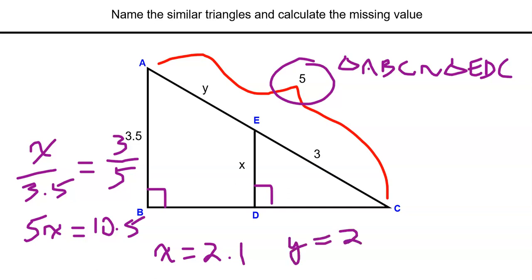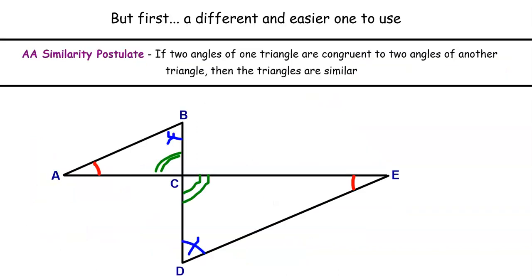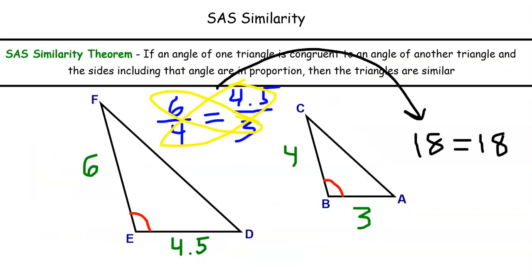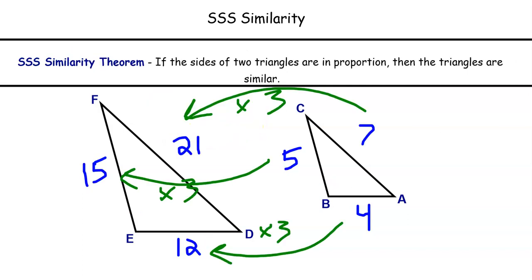To wrap up: three ways to prove triangles similar — the angle-angle similarity postulate, the side-angle-side similarity theorem, and the side-side-side similarity theorem. All of this goes back to the idea that triangles are relatively simple polygons with only three sides and three angles, meaning we need less information to prove triangles similar than we do for other polygons.